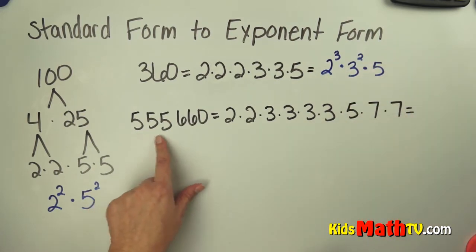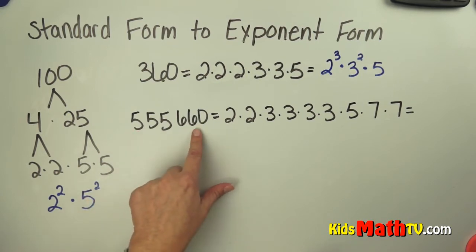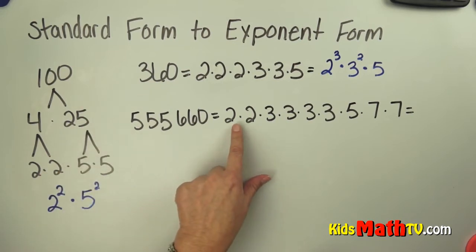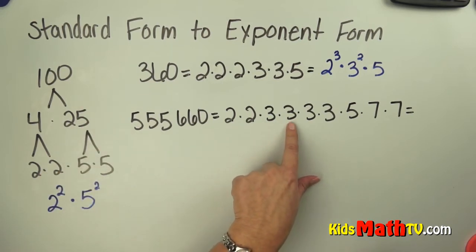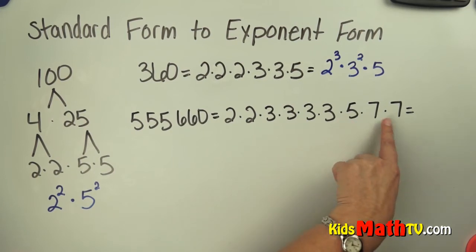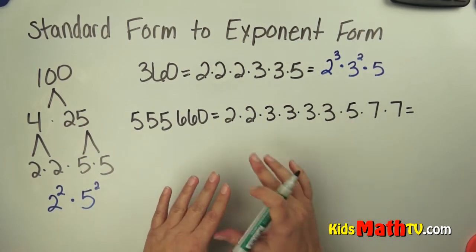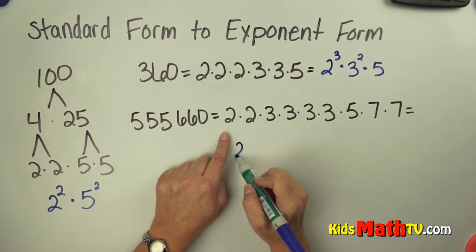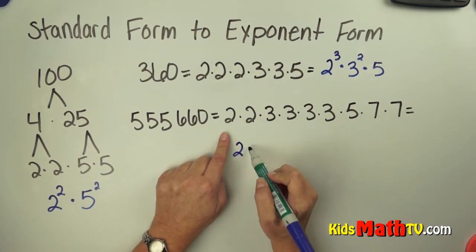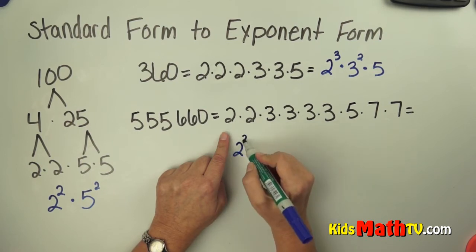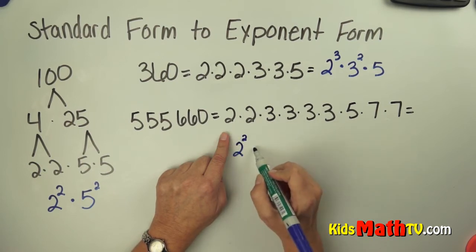Here's this big long number: 555,660. If we do the prime factorization of that, we get 2 times 2 times 3 times 3 times 3 times 3 times 5 times 7 times 7. Using the same process, we're going to take each base. I see a base of 2, and I count the number of times there is a 2 — there are 2. So the exponent is 2.